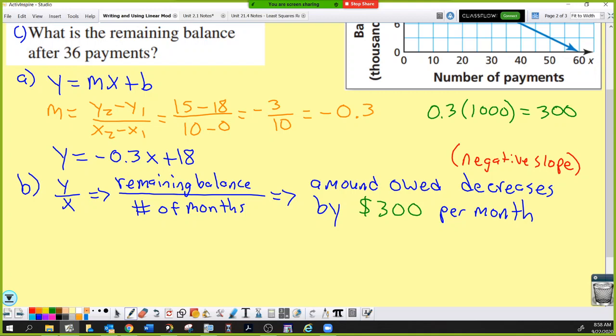The amount owed decreases by $300 per month. Obviously, your car payments are $300 per month. We're pretending there's no interest. That's not how the real world works, but that makes math easy. The y-intercept is 18. What does that mean? It's got to mean something to this question. Remember, this is a car loan. What is the y-intercept telling me?